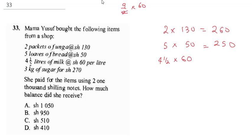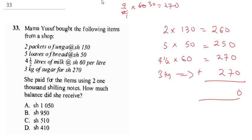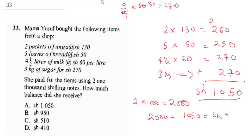60 times 4.5 is the same as 9 over 2 multiplied by 60, giving 270. Three kg of sugar costs 270 shillings. Summing all items: 260 plus 250 plus 270 plus 270 equals 1,050 shillings total. She paid with two 1,000 shilling notes, so 2,000 minus 1,050 gives a balance of 950 shillings. The correct answer is B.